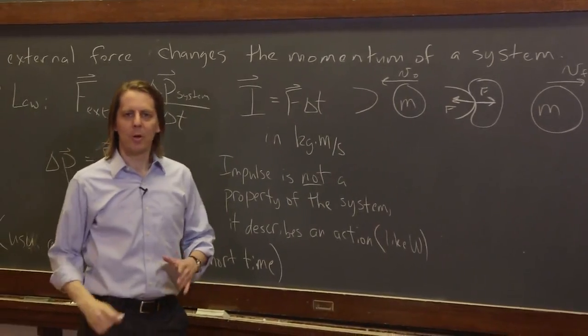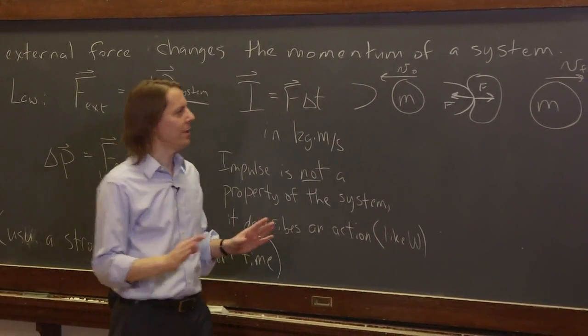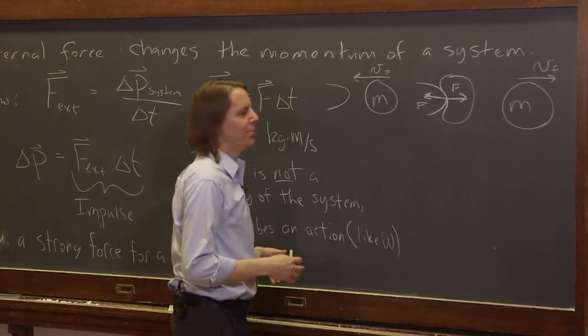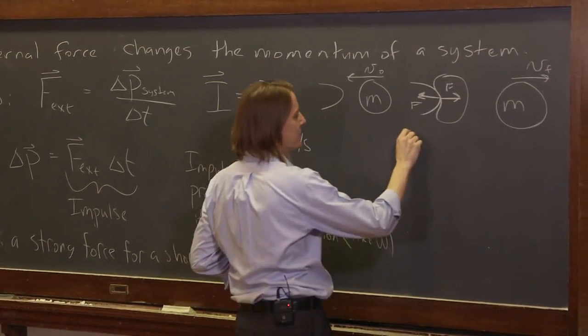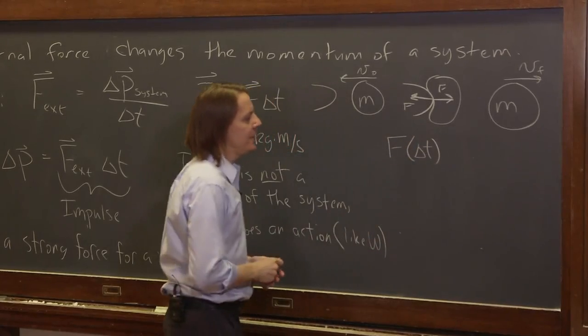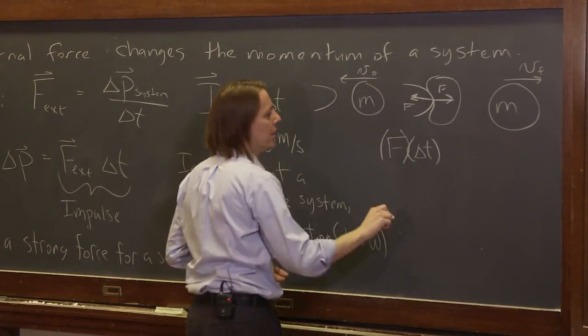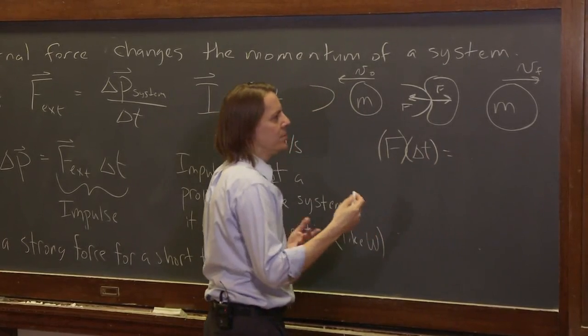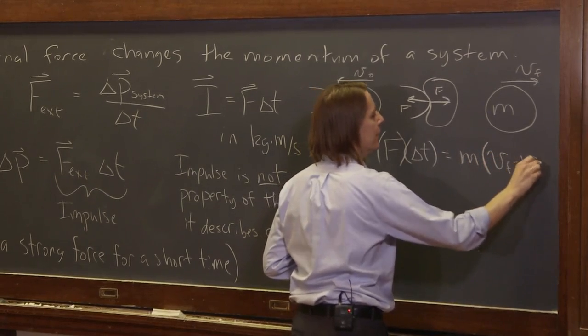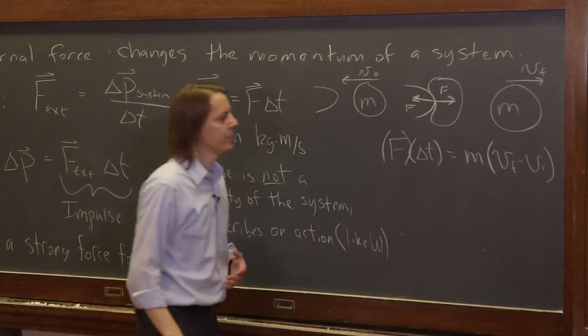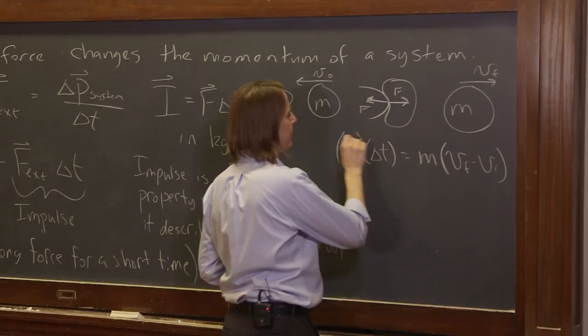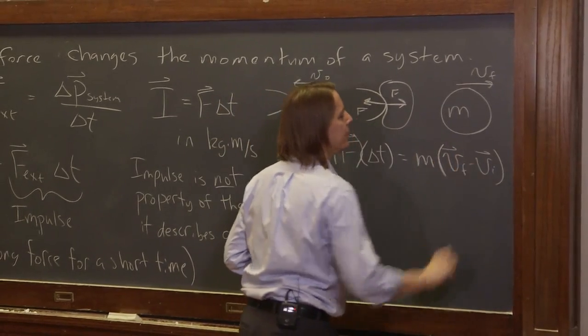So in an impulse problem we aren't trying to conserve momentum. We're not thinking about the foot as part of the system, the system is just the ball. We're looking at the change in momentum. And the expression is simply F, the force you applied, times delta T, the time you applied it, is equal to the change in momentum, which is just the mass times the velocity final minus the velocity initial, the change in velocity, if we're treating these as vectors like that.